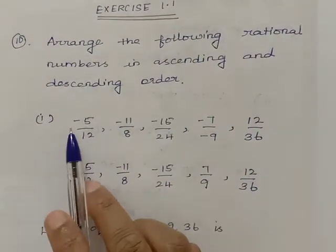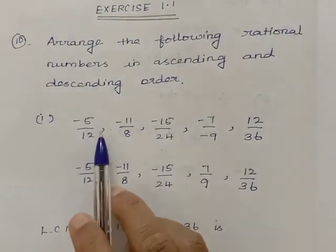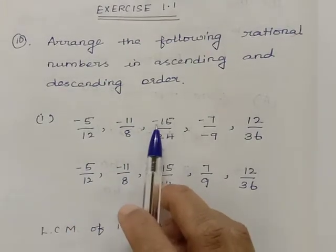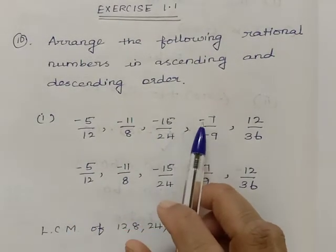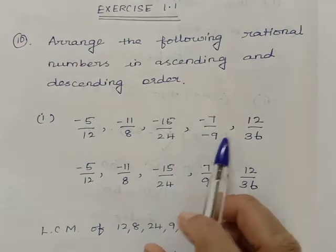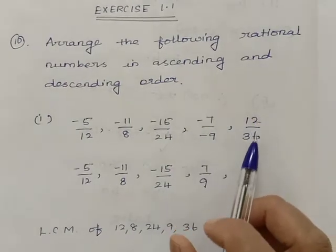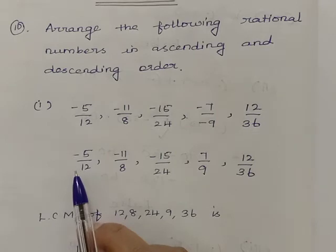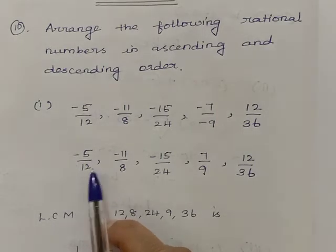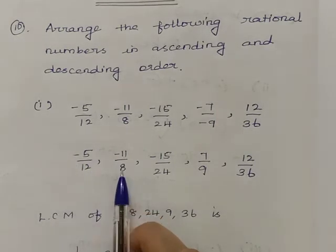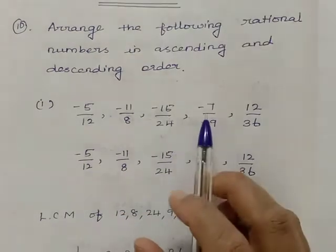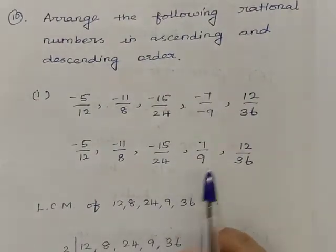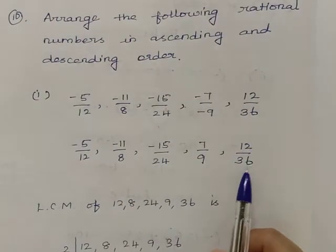The first question: minus 5 by 12, minus 11 by 8, minus 15 by 24, minus 7 divided by minus 9, comma 12 by 36. The minus-minus gets cancelled, so it becomes 7 by 9, comma 12 by 36.